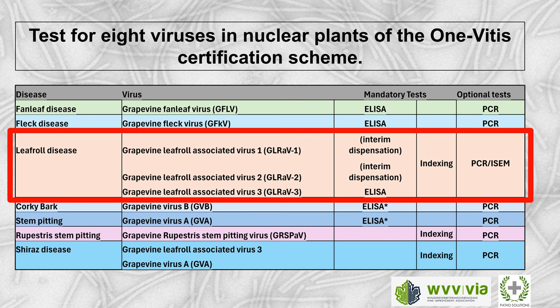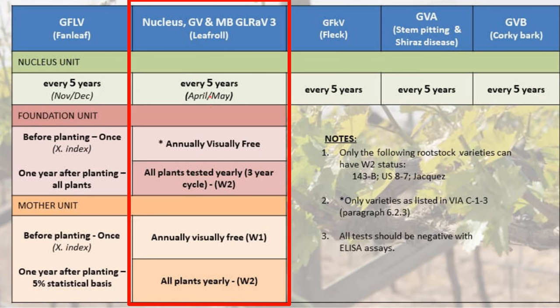Routinely, the nuclear material is tested for eight different viruses associated with various grapevine diseases. Looking only at leafroll-associated viruses, the nuclear material is tested for leafroll types 1, 2, and 3. Testing for type 3 is conducted every five years, because the nuclear material is kept under insect-free conditions. In the foundation blocks, they are tested annually by monitoring for symptoms — this refers to a limited number of red cultivars — while all other cultivars are tested every three years. The same applies on mother blocks, where they are tested statistically for the presence of leafroll.